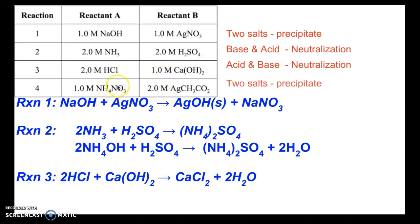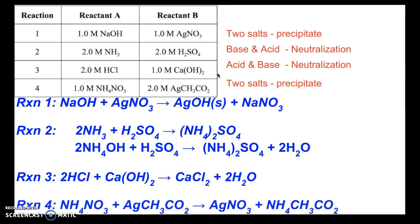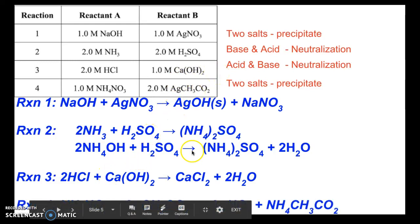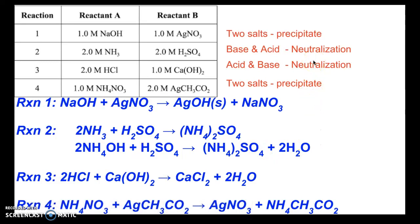For reaction 4, we have two salts, so it's a precipitate reaction. However, the products — silver nitrate and ammonium acetate — are both soluble in water, so as a result this reaction has no reaction.